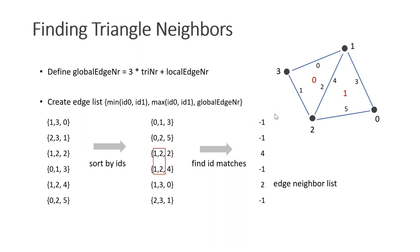From this information we can compute an edge neighbor list. A minus 1 means the edge is open. Now if you want to know what the neighbor of triangle 0 across local edge 2 is, we first compute the global edge number. In this case it's 2. We check the neighbor list and read a 4. 4 means it's triangle 1 with local edge number 1. As you can see this is the correct result.